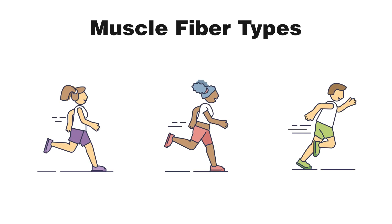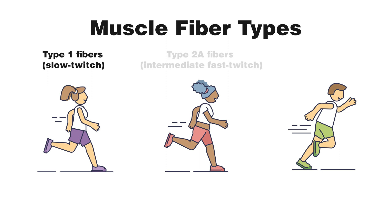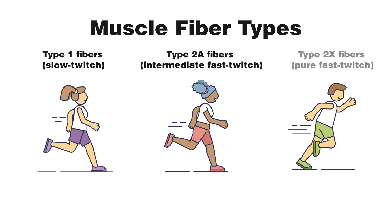The slow and fast twitch fibers can be further broken down into different categorizations. The slow twitch fibers are also called type 1 fibers, and the fast twitch fibers are also called type 2 fibers. There are two different categories of type 2 fibers: type 2a and type 2x. These pictures on screen are organized by the type of muscle fibers used the most in those particular activities.